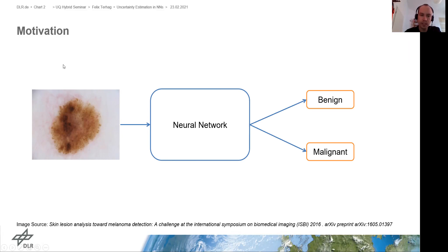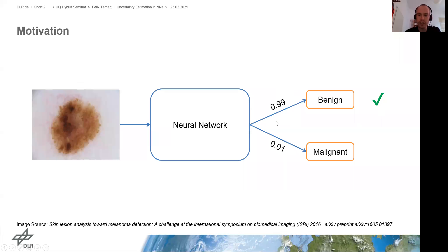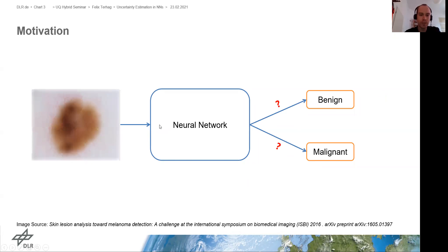For example, let's suppose we've trained a neural network to classify skin lesions as either benign or malignant. Let's further suppose we did a good job at training this neural network and we can classify this image as being benign — and this is correct — and we give benign a very high confidence. So we have a happy patient because the skin lesion is good, and we are happy because we did a good job in training this neural network.